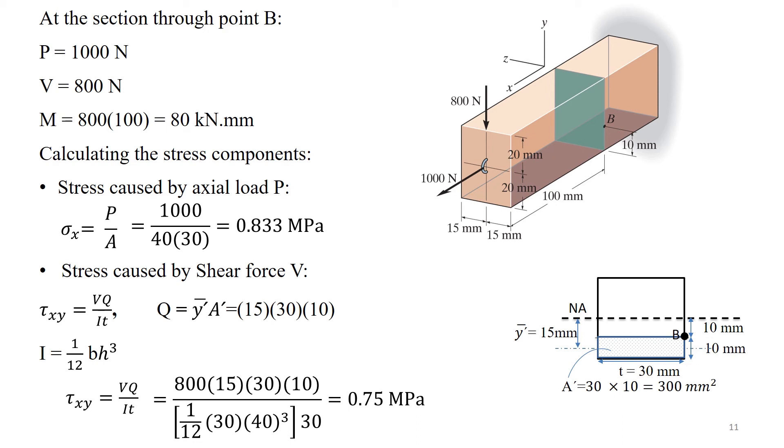Here, A prime is 300 mm squared and T equals 30 mm. The moment of inertia of the entire cross sectional area about the NA axis can be calculated using 1 over 12 times base times height cubed. Therefore, we can write tau XY equals VQ over IT equals 0.75 MPa.